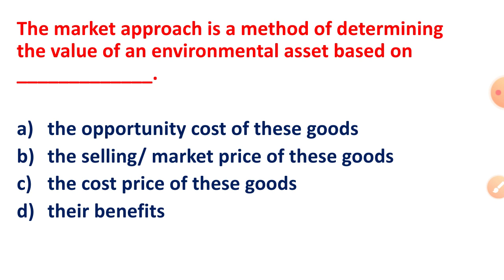Option A: the opportunity cost of these goods. Option B: the selling or market price of these goods. Option C: the cost price of these goods. Option D: their benefits.